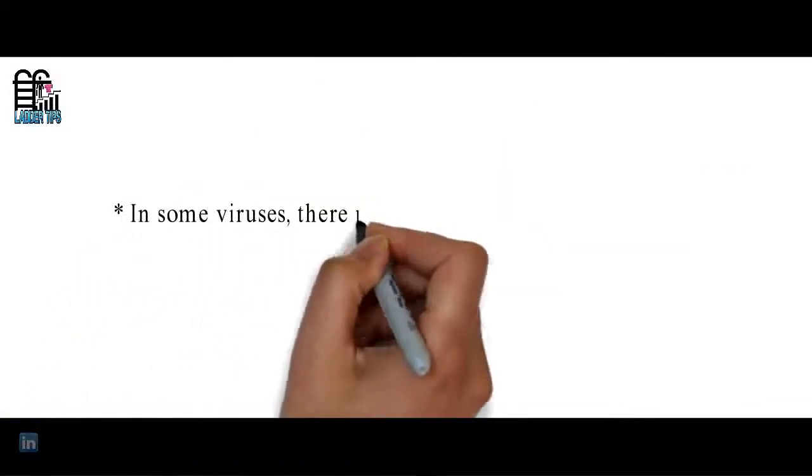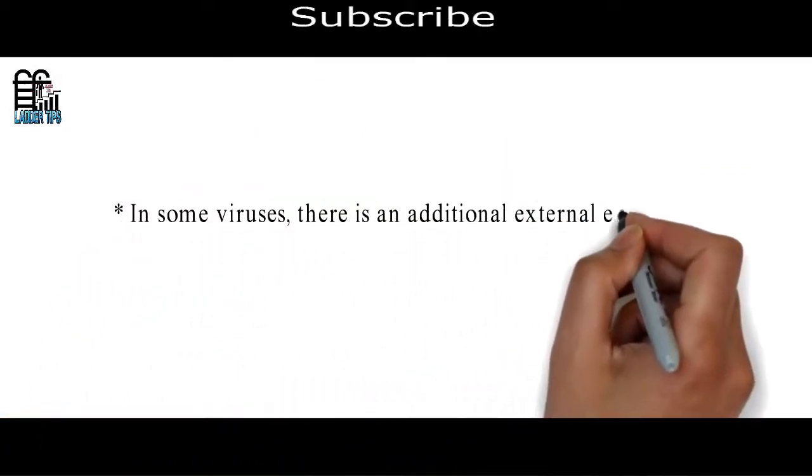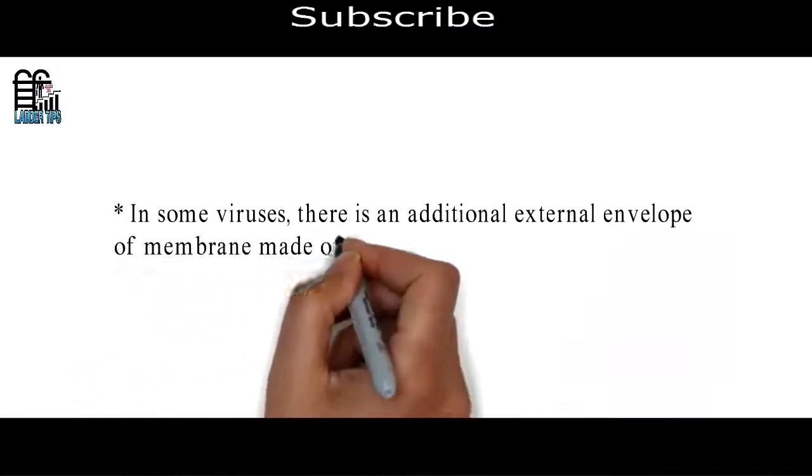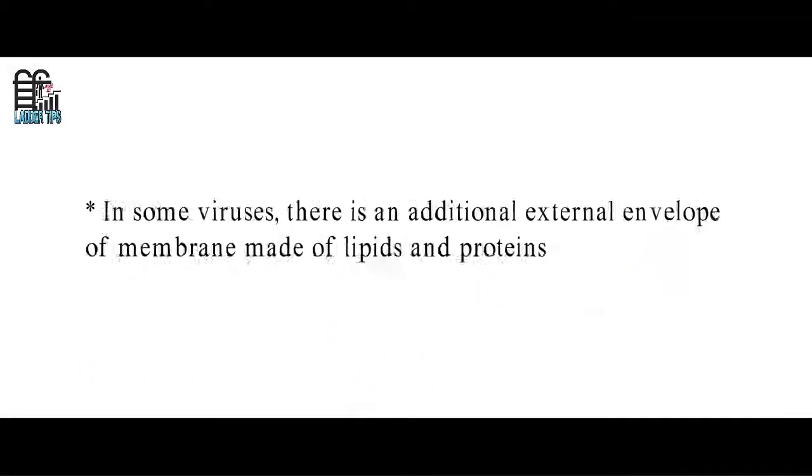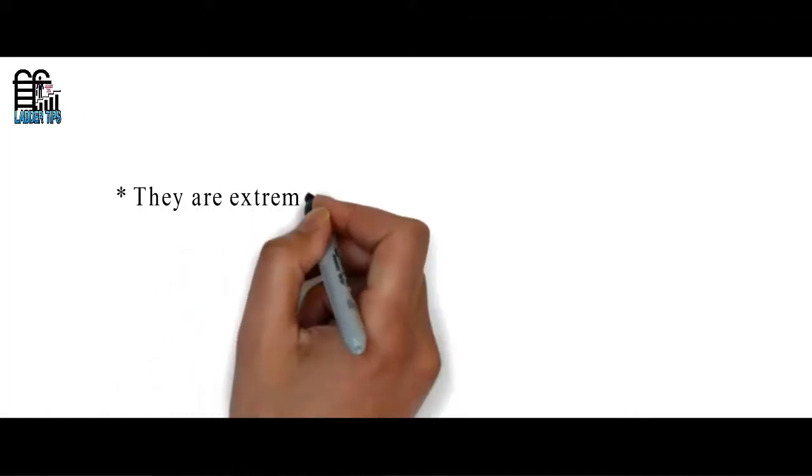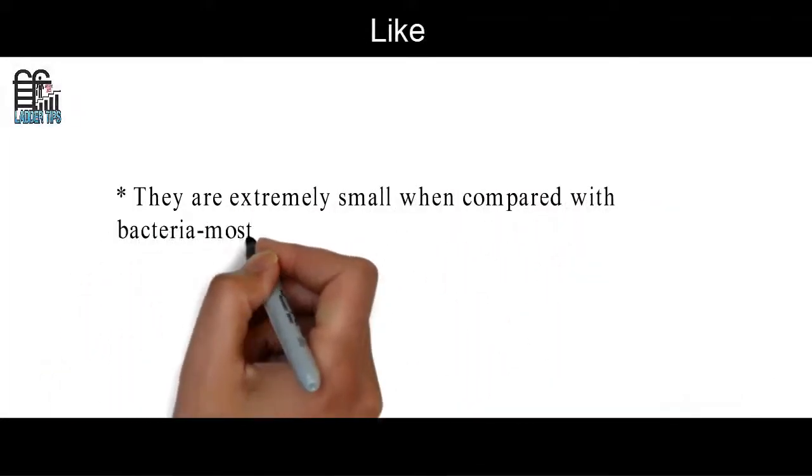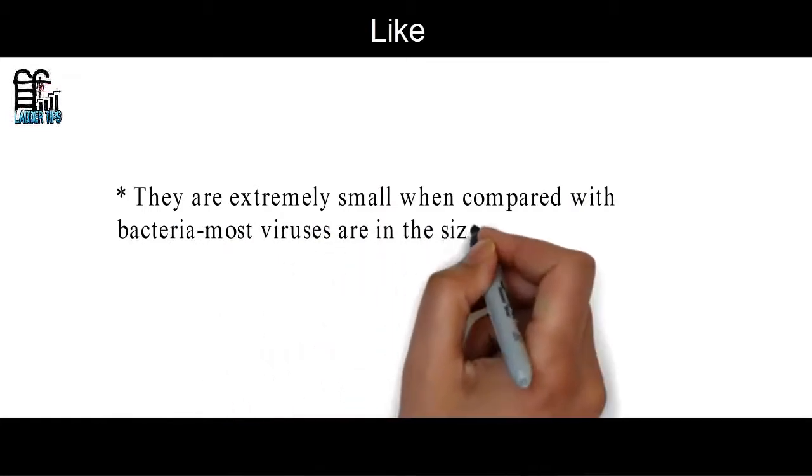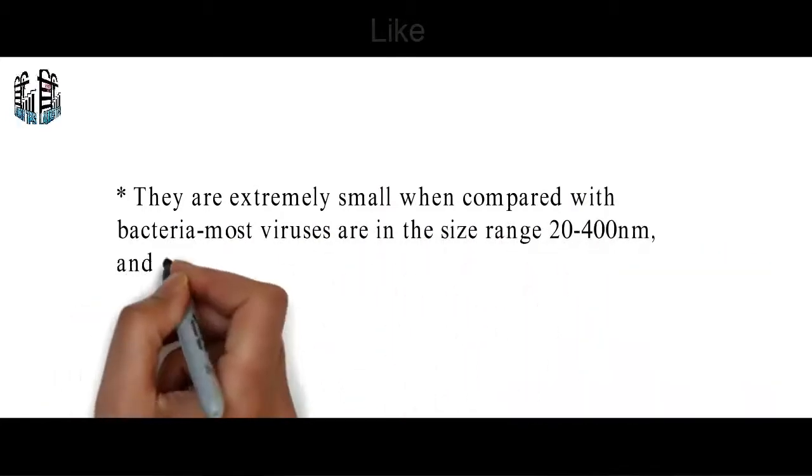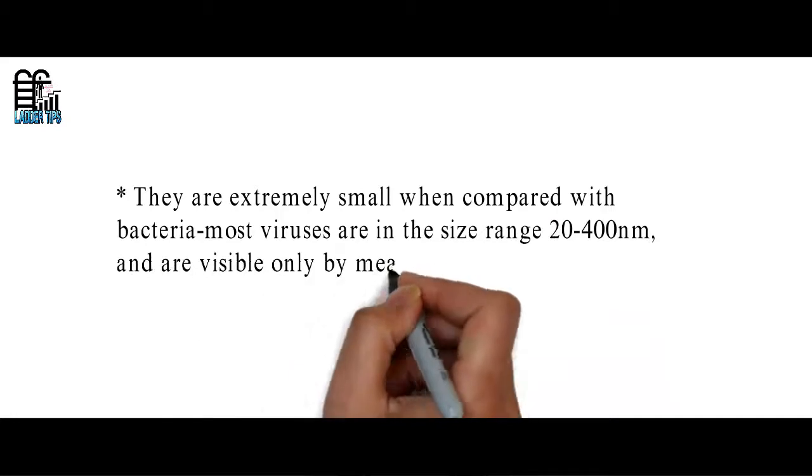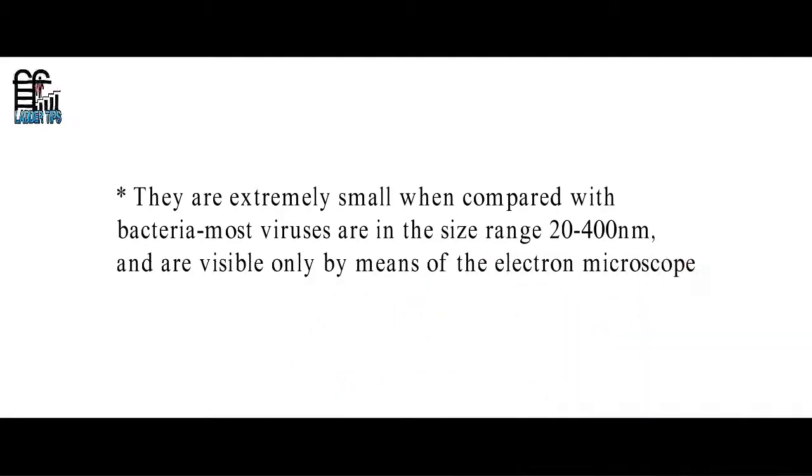In some viruses, there's an additional external envelope of membrane made up of lipids and proteins. They are extremely small when compared with bacteria. Most viruses are in the size range of 20 to 400 nanometers and are visible only by means of the electron microscope.